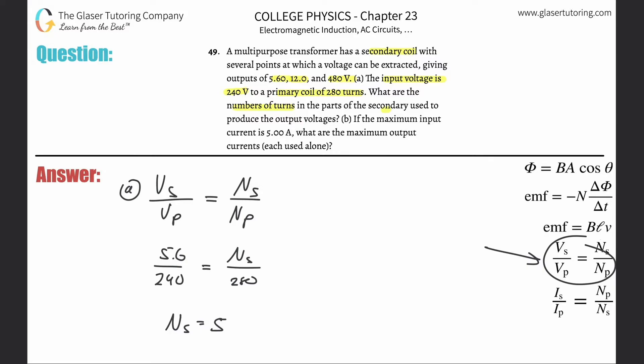So number of turns here in the secondary, we're just going to do a little cross multiplication. So it's 5.6 times 280 divided by 240. So that's going to be 6.53. And that's the number of turns. So about six, six and a half ish.